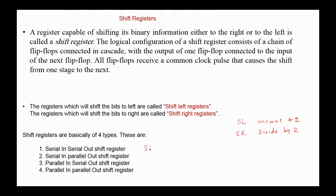The four types are: serial-in serial-out, serial-in parallel-out, parallel-in serial-out, and parallel-in parallel-out.